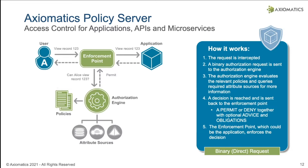We introduce a notion of an enforcement point. An enforcement point can be a few lines of code within your applications that just make a call out to the authorization service and provide the authorization decisions back to the application. A classic example of what an enforcement point can be is an API gateway.